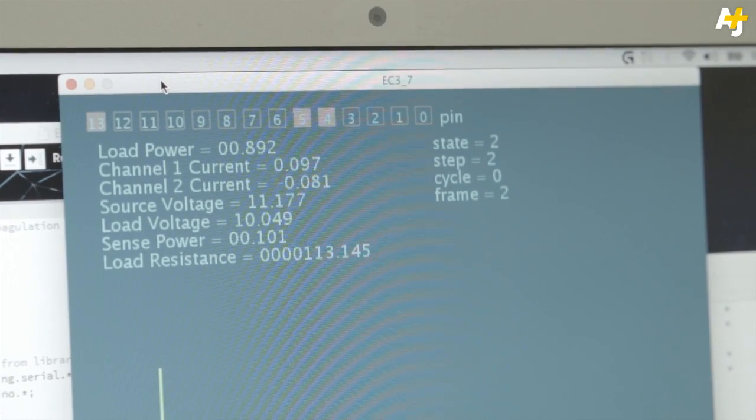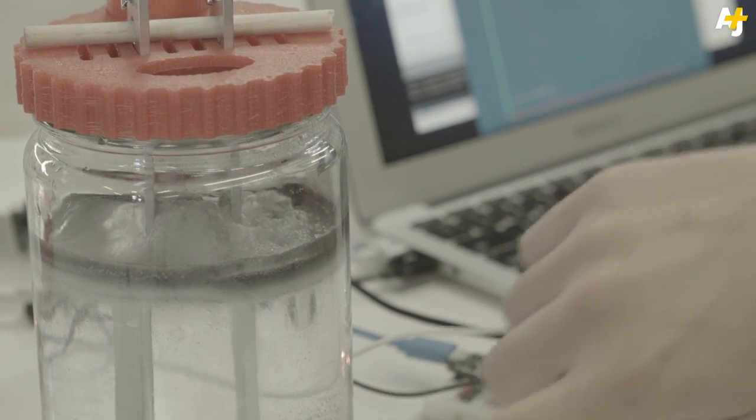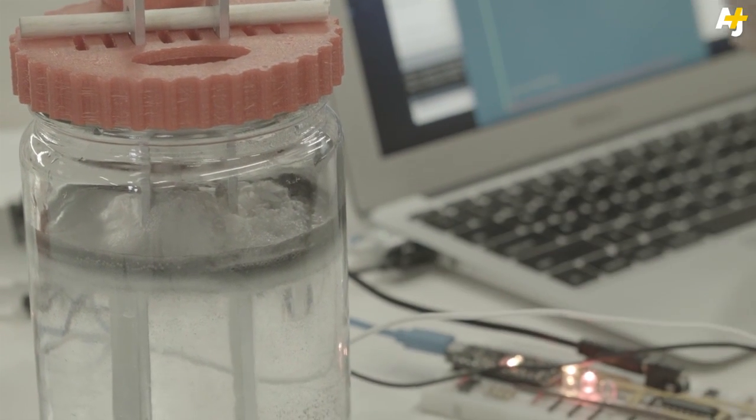So the technology works by running an electric current through water. And depending on what metals you're using and what pollutants or contaminants are in the water, you can sometimes separate those contaminants with this current. That's the simplest way I can put it.